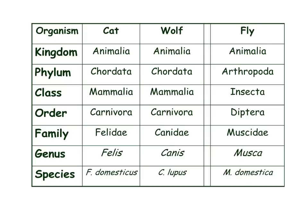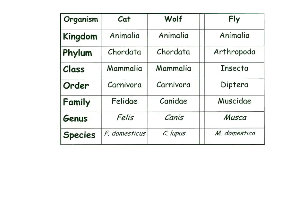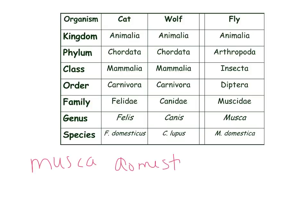Let's look at this chart and answer some questions. For instance, what kind of animal is Musca domestica? Using this chart, you can see that it is commonly called a fly.